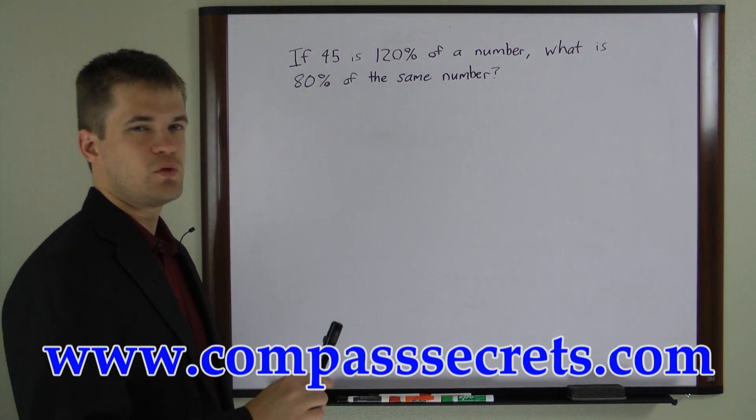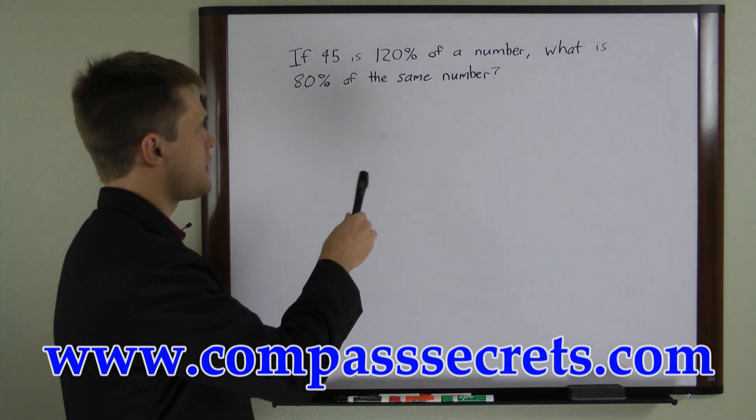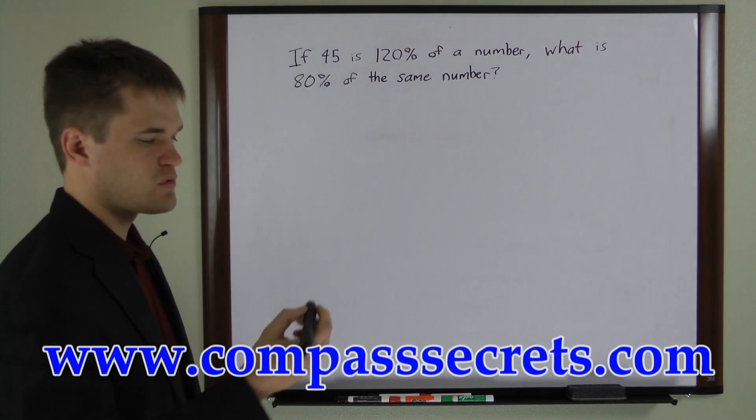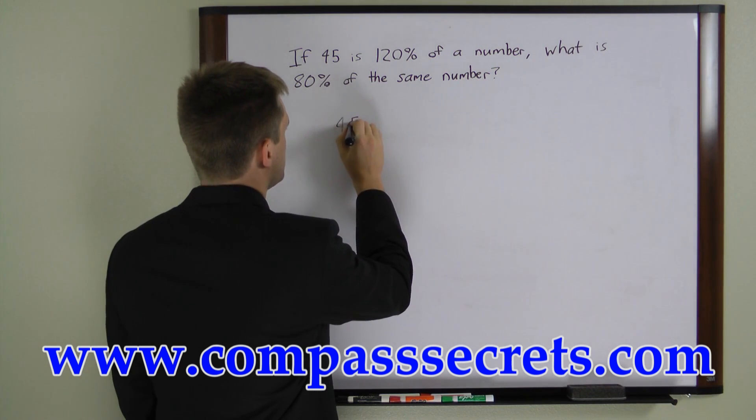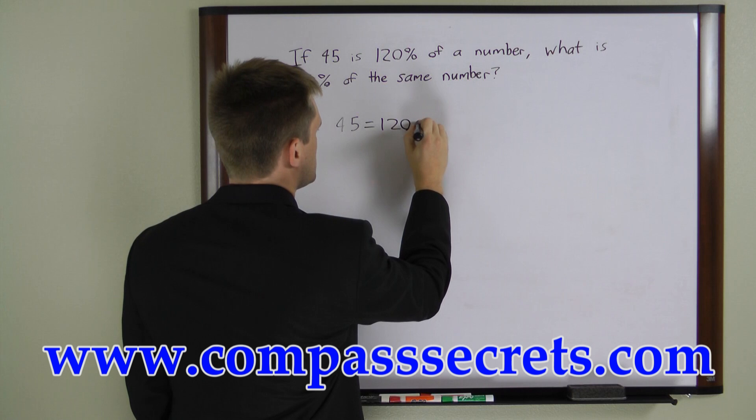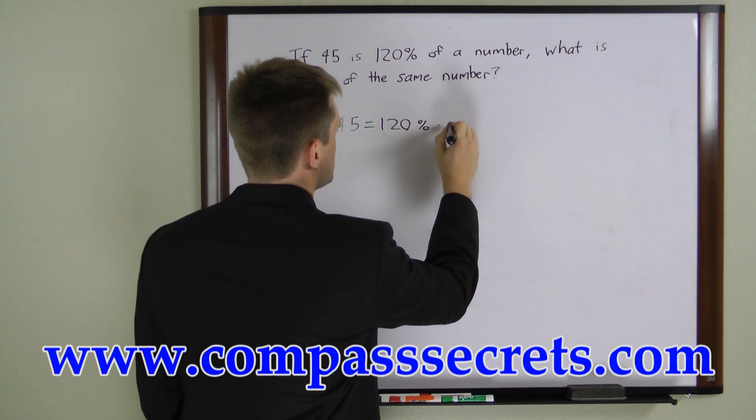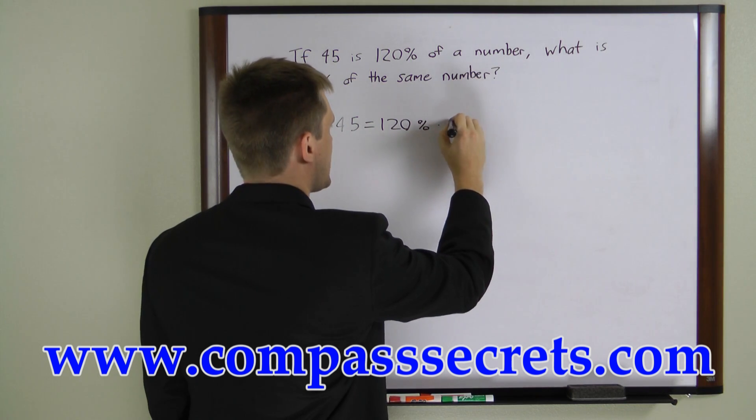This problem gives us two equations that we can solve to find the number we're looking for. Let's write the first one. First we have 45 equals 120% times a number. We'll call that number x.